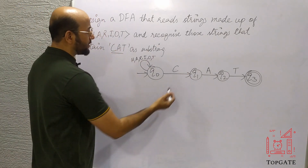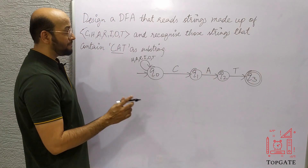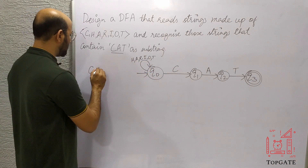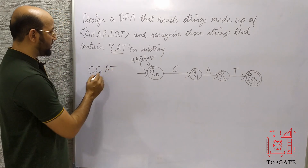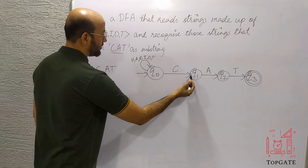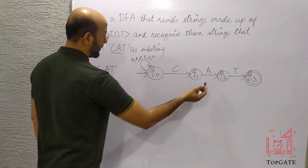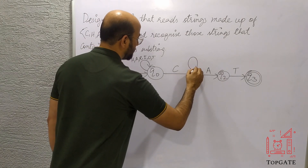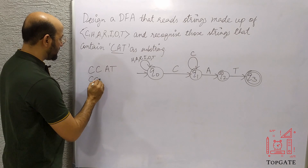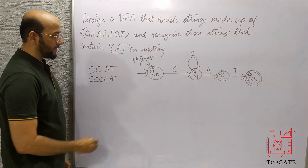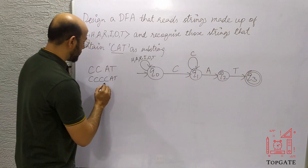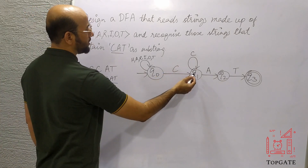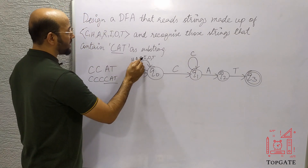Now let's come to Q1. At Q1 we already have a path for A. We also need paths for C, H, R, I, O, T — six paths remaining. Consider the string C, C, A, T: from Q0 on C we go to Q1, then at Q1 we encounter C again. So I'll add a self-loop on Q1 with C, which also handles strings like C, C, C, ... A, T where 'cat' is still preserved. For the remaining characters H, R, I, O, T at Q1, I'll add transitions back to Q0.